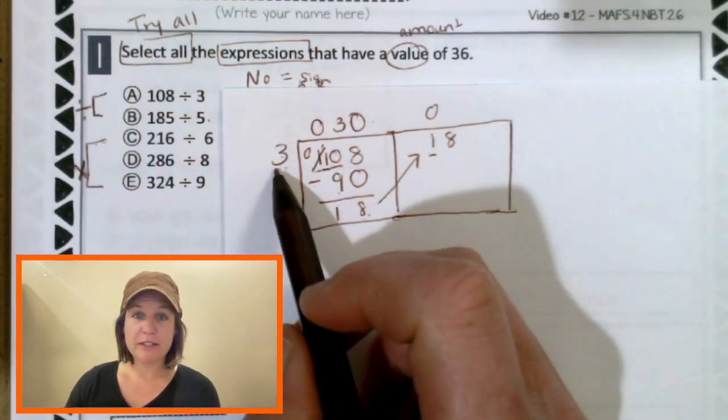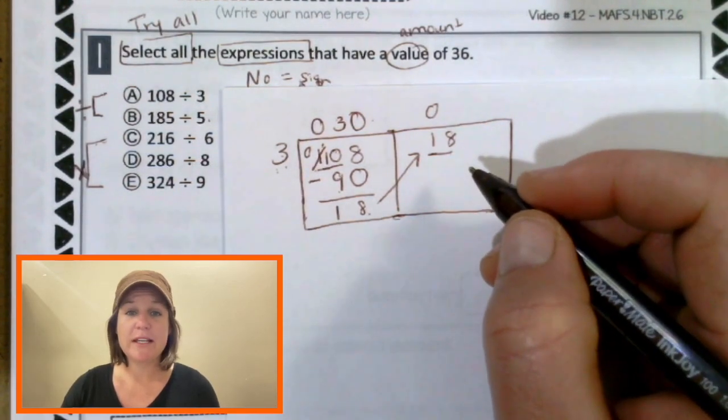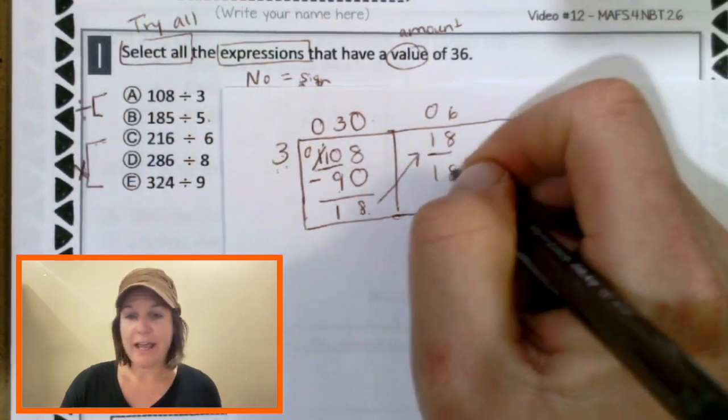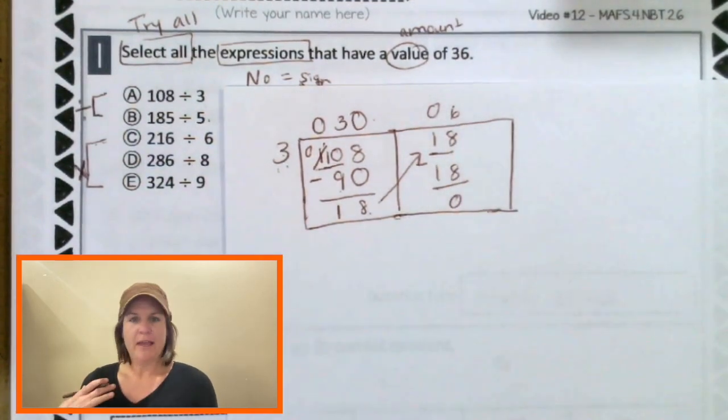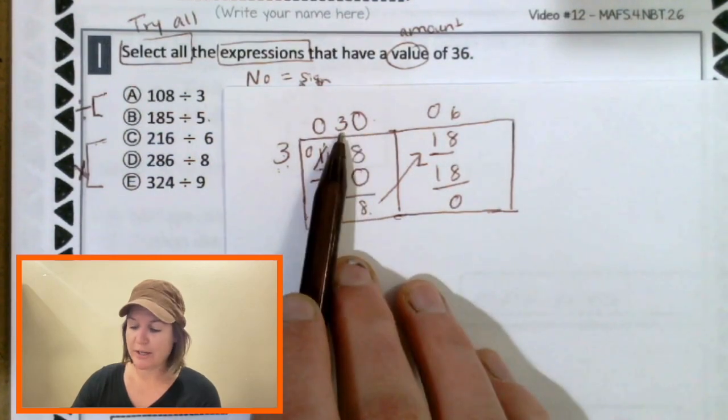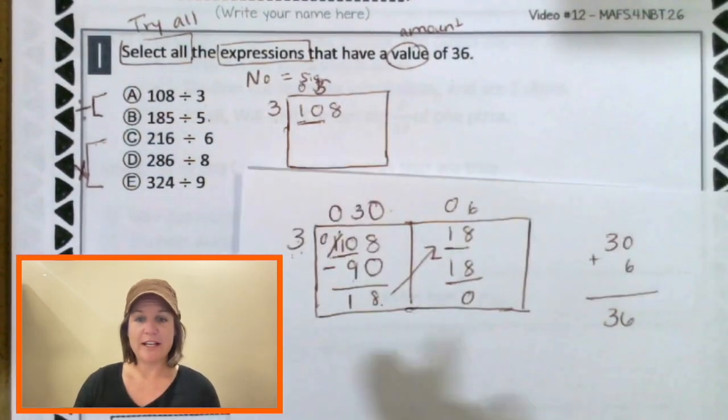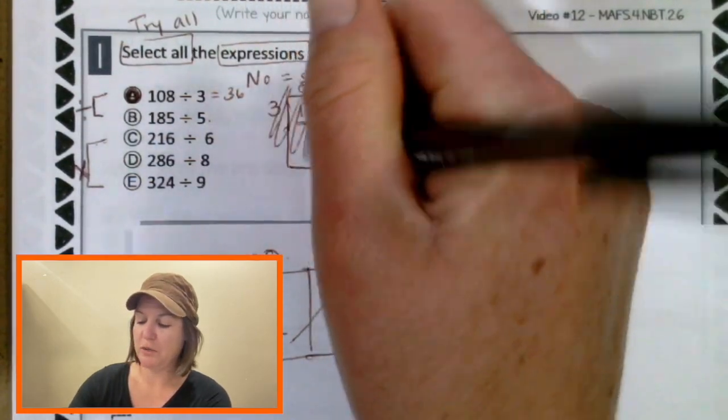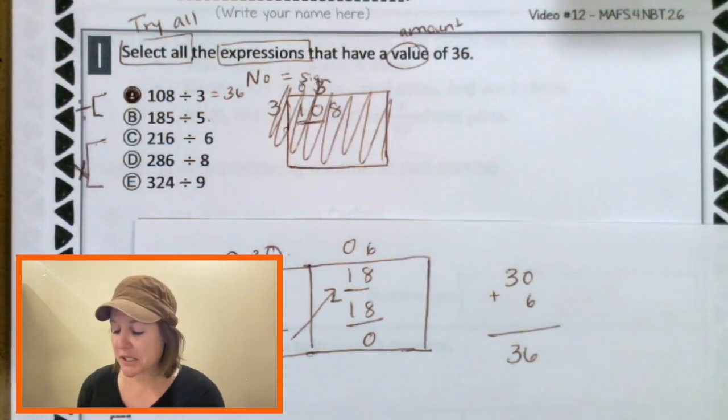Because under here I've got an 8, I'm going to put a 0 right there. So 3 times 30 would be 90. And then I subtract. 8 minus 0 is 8. 0 minus 9? We need to regroup. Take 1, that becomes a 0. Give 1, that becomes a 10. 10 minus 9 is 1. So 18 is greater than 3. That means we can do this again. How many times can 3 go into 18? Let's count by 3s. 3, 6, 9, 12, 15, 18. 6 times. Exactly. And now when I subtract, 18 minus 18, what do we get? 0. And now I have to add 30 plus 6 equals 36. So when I solved this out, did I get a value of 36? I sure did.